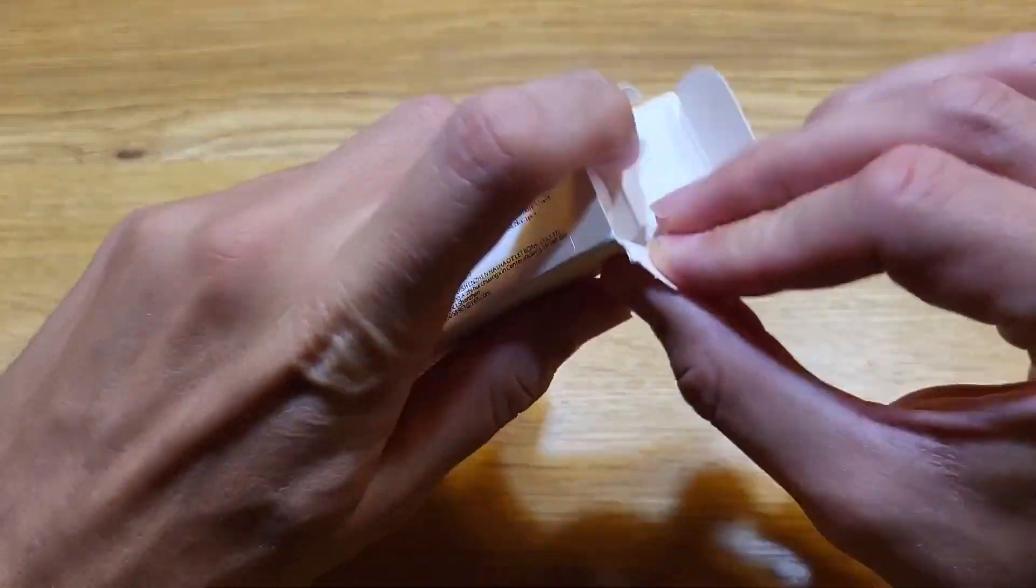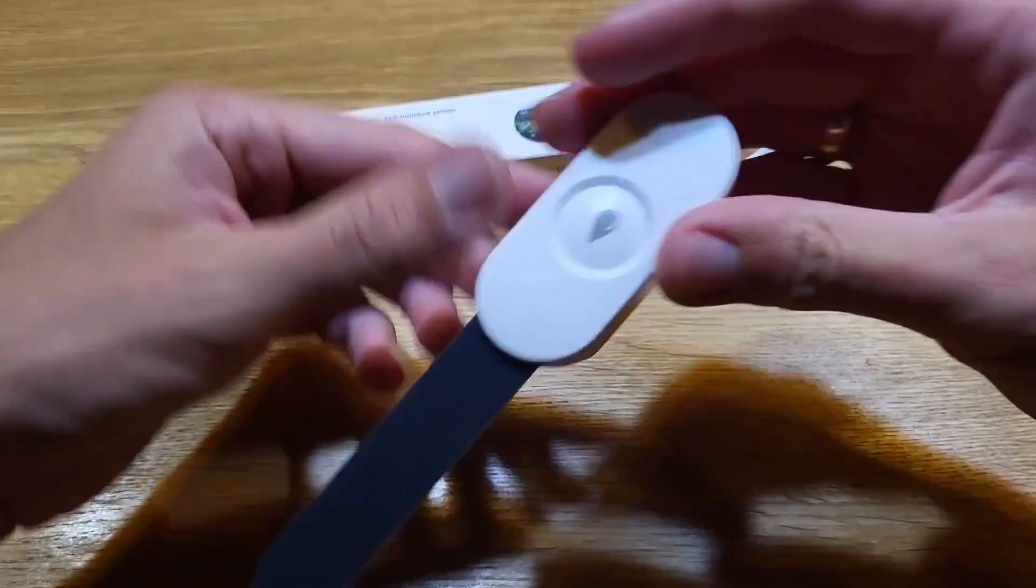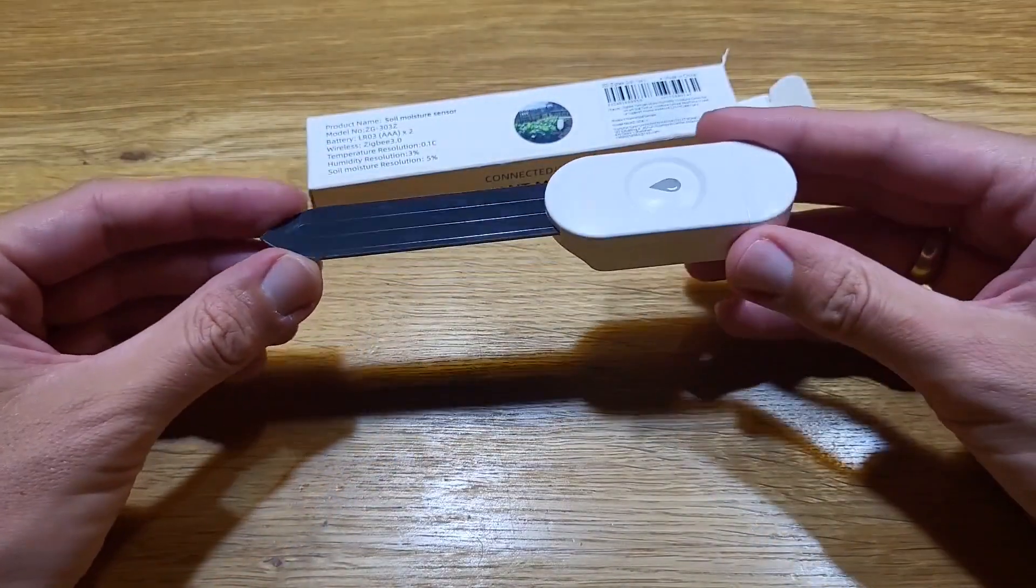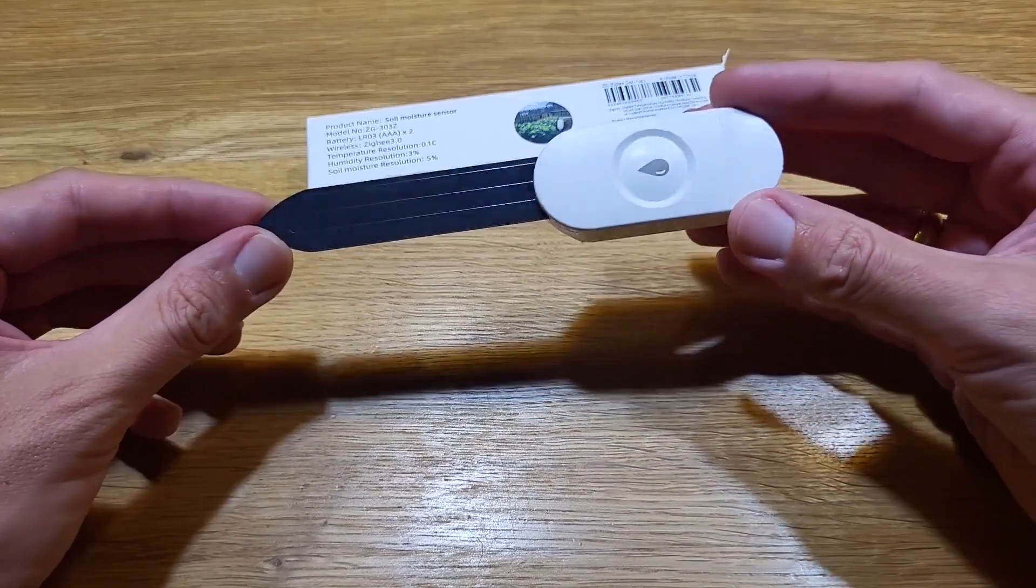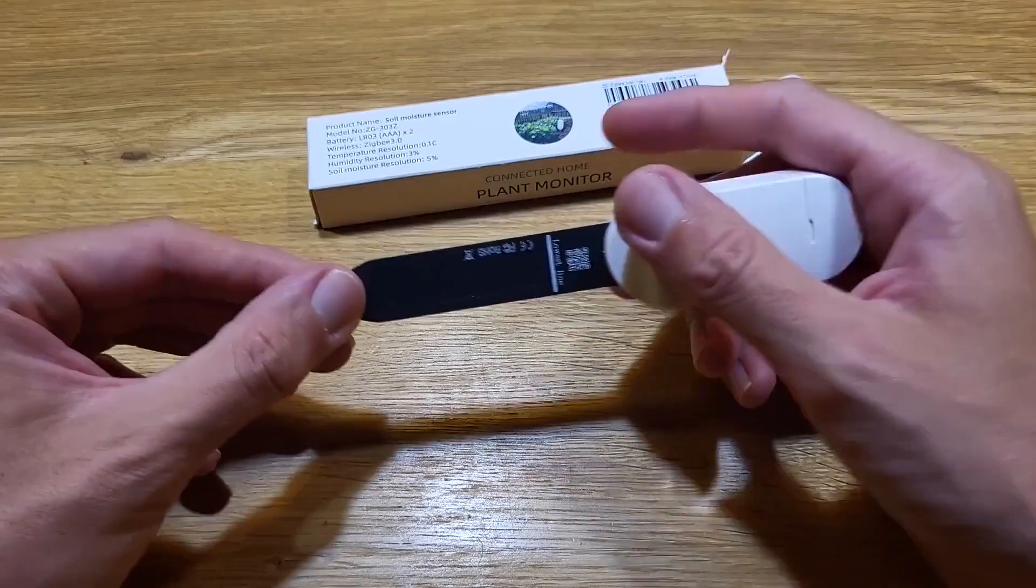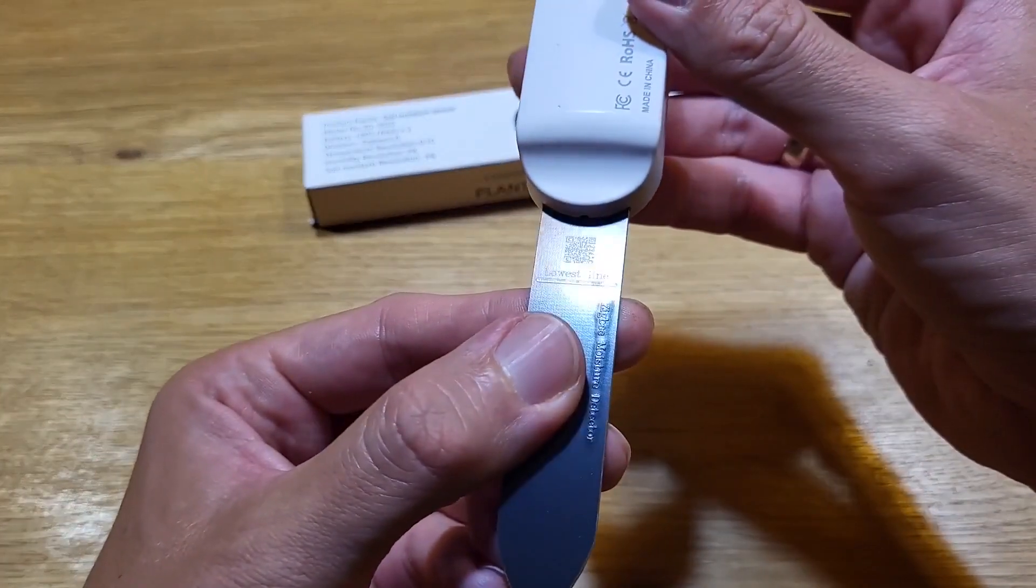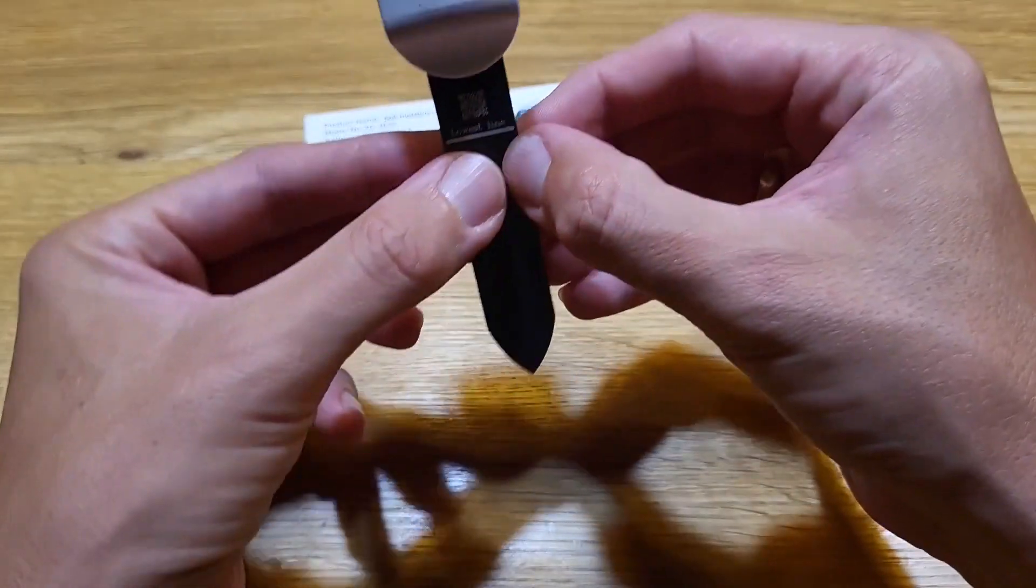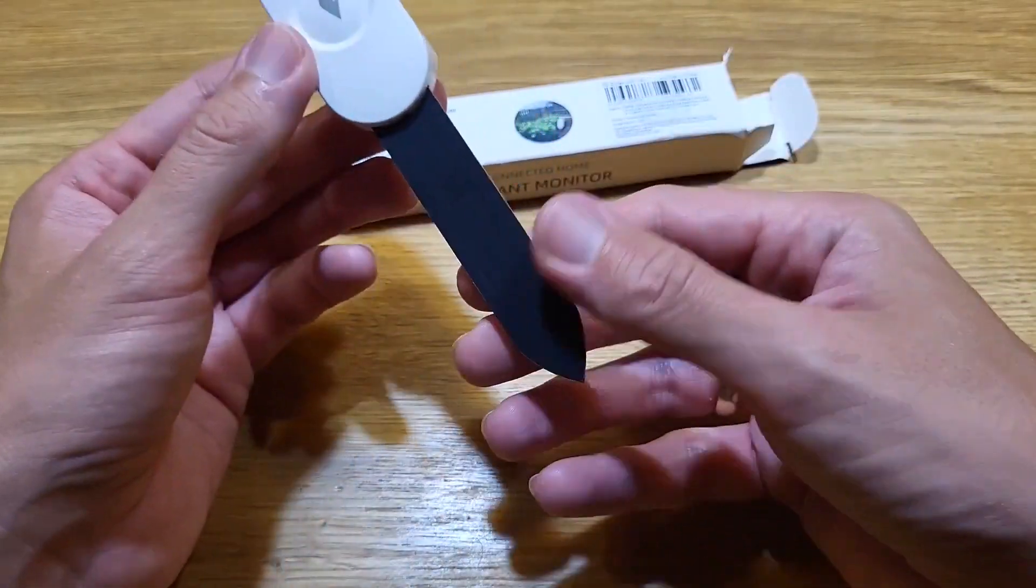So let me open the box and see what's inside. There is a manual but let's start from the device. The device is not heavy - when we put batteries there for sure it's gonna be a bit heavier. So here is the line, the lowest line, so we cannot put it under this line to the soil.